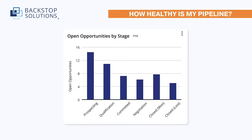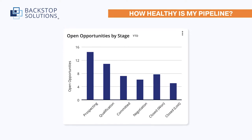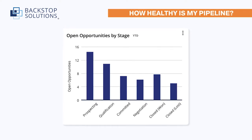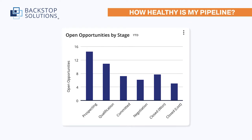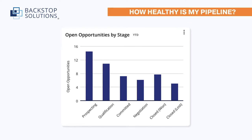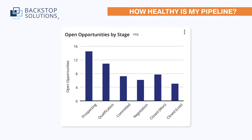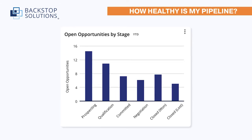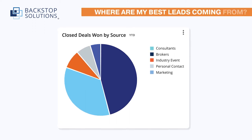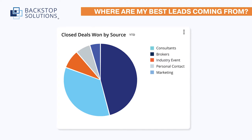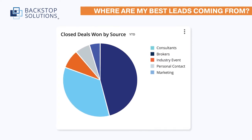Another example: how healthy is my team's pipeline? If you don't have enough pipeline to cover your quota, your team will need to spend more time on prospecting and demand creation. If you do have a healthy pipeline, your team can spend more time bringing in-flight deals across the finish line. Where are my best leads coming from? Knowing the quality of each lead source saves you valuable time and allows your team to focus their efforts where they receive the best results, which increases your win rate.